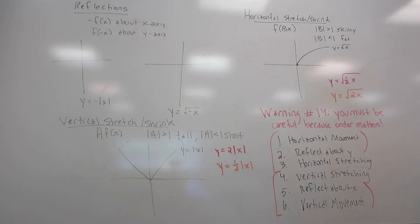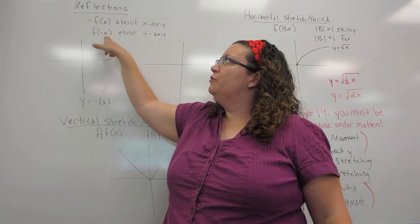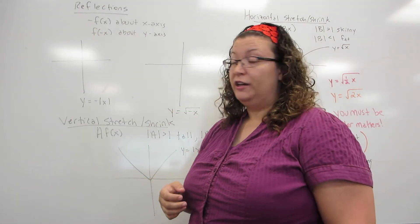We're going to continue our discussion of graphing with two other kinds of graph transformations. The first is reflections, and a reflection is when you introduce a negative sign somewhere in the equation. There's two different kinds of reflections.